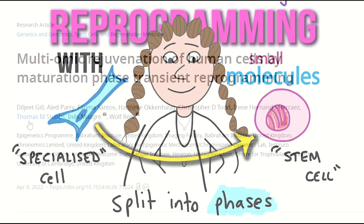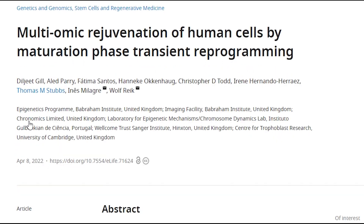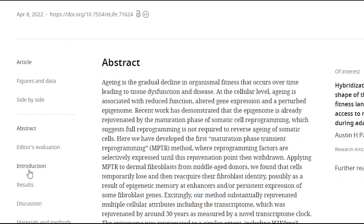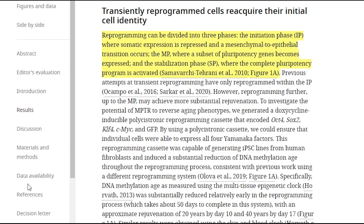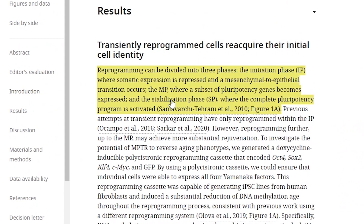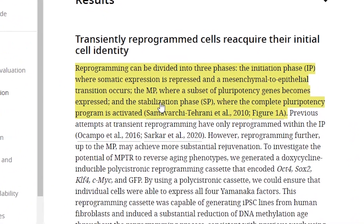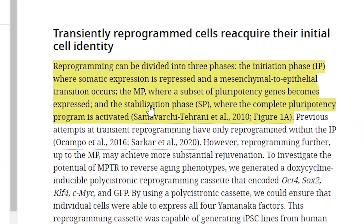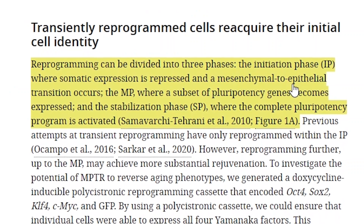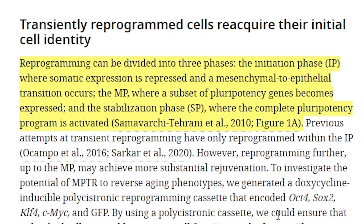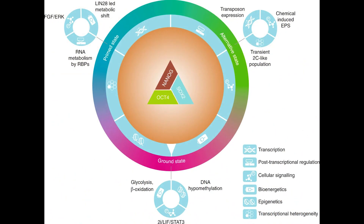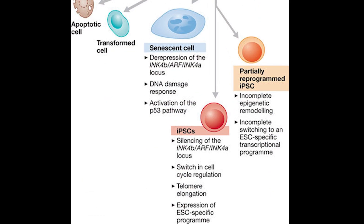Here they've divided it into three phases. Firstly, the initiation phase, where you want to repress the current somatic expression of the differentiated state. Secondly, the maturation phase, where you start to activate some of these pluripotency genes. And then the stabilisation phase, where the complete pluripotency program is activated, and as hinted at by the name, it's stable — it stays as a stem cell.